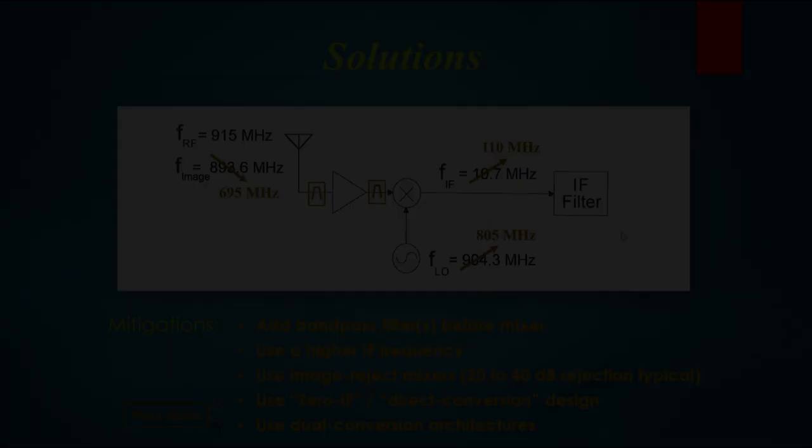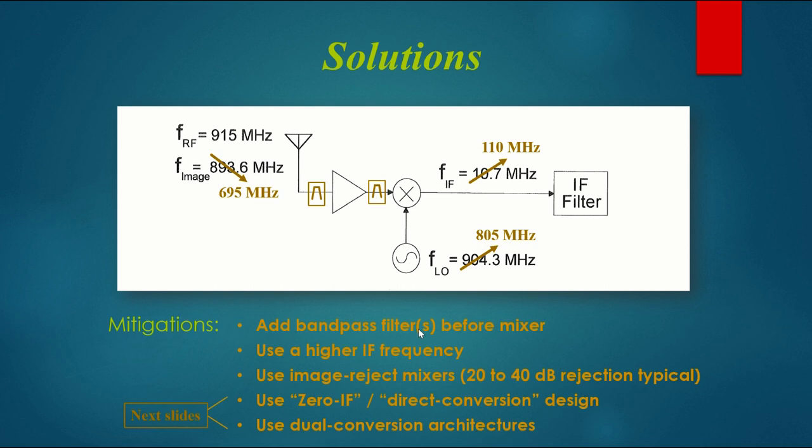So to deal with the image problem, we need some solutions, or mitigations. One solution, the classic one, is to add bandpass filters before the mixer. And if you can make these filters narrow enough, then you could block this 893.6 MHz image if it happened to be on the air. But the problem is it's very difficult, especially at this high frequency, to make these filters narrow enough. Plus, they might have to be tuned as you change the frequency you're trying to pick up.